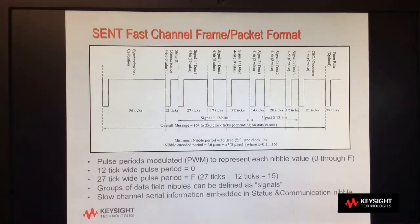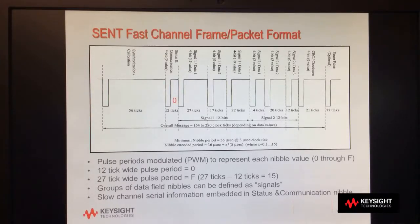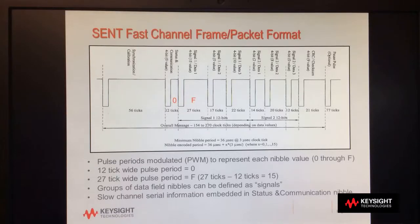Here we show a timing diagram of a CENT packet of fast channel data. CENT data is encoded by modulating pulse periods to represent nibble values. For example, a 12-tick-wide pulse period, which is the minimum pulse period, represents a value of zero. A 27-tick-wide pulse period, which is the maximum pulse period excluding the CENT pulse, represents a nibble value of 15, or F.